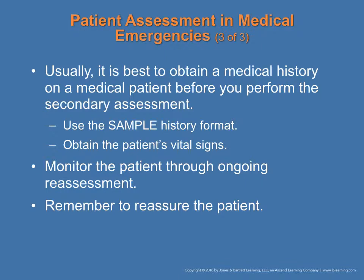It's usually best to obtain medical history on a medical patient before you perform the secondary assessment. The medical history gives you an idea of what's going on — for example, a 46-year-old male with chest pain. Do they have a history of high blood pressure? Diabetes? Do they take medication? Obtain your patient's vital signs and know what is abnormal versus normal. Monitor the patient throughout ongoing reassessment. Remember to reassure the patient.